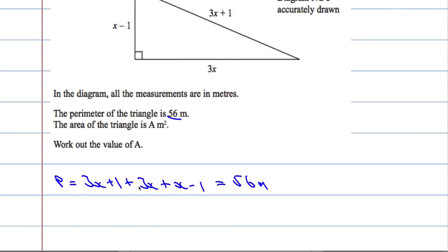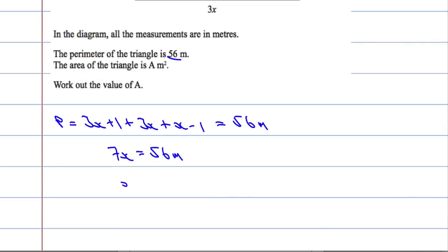So, 3x plus 3x plus x. 3x and 3x is 6, and 1 is 7x. We get 7x, and then 1 take away 1 is 0. So, 7x equals 56 metres, which means that x, dividing both sides by 7, must be 8 metres. So x is 8 metres.